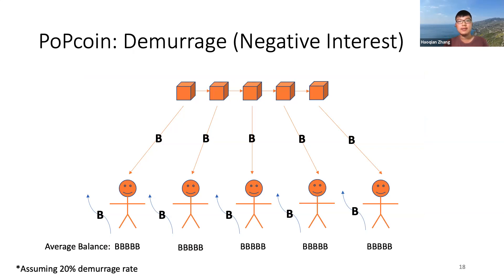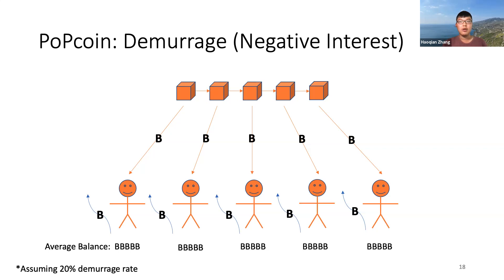Assuming a dramatic demurrage rate — say 20% for illustration — on average each person has to lose one portion of basic income when they already have 5%. At the same time, everyone still receives one portion of basic income. Therefore the supply of money remains the same.